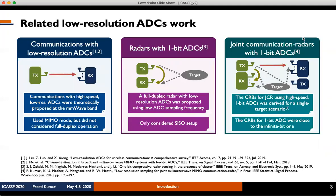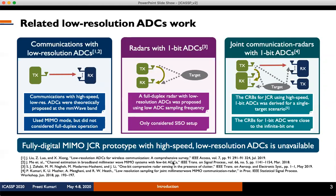Looking at related low resolution ADC work: there is some work in communications with low resolution ADCs that employ MIMO mode and use high speed ADCs, but they do not consider full duplex operation. There is limited work in radars with one-bit ADCs; however, these use low ADC sampling frequency and only consider SISO setups. Recently, we proposed joint communication radar with one-bit ADCs and used the Cramér–Rao bound to show that one-bit ADC performs close to the infinite-bit ADC. Currently, however, there is no available fully digital MIMO joint communication radar prototype with high speed, low resolution ADCs.